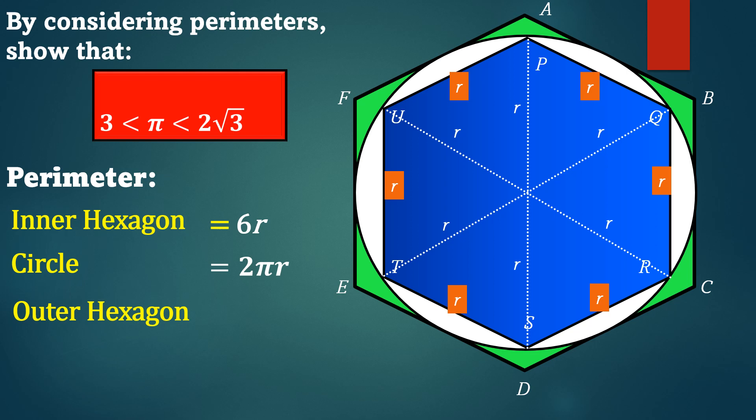For the perimeter of the circumscribed, the outer regular hexagon, if we now extend the radii or join the vertex of these two hexagons, creating this nice triangle.